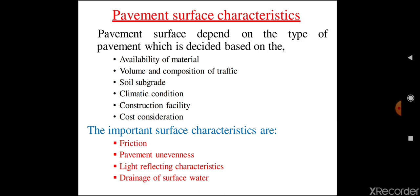Cost of construction also has its influence on the pavement surface. If the cost of construction is low, then an engineer or contractor can provide a good quality pavement surface, but the cost of construction depends on availability of labor and availability of good quality material. So these are all the primary factors or primary characteristics of a pavement surface. Apart from this, there are a few more important characteristics on which the pavement surface depends.